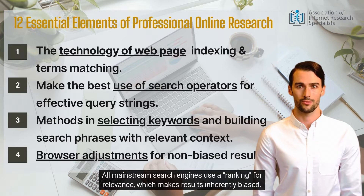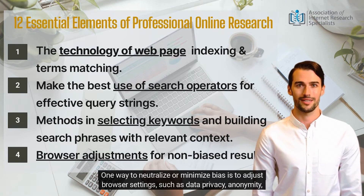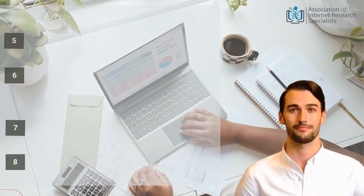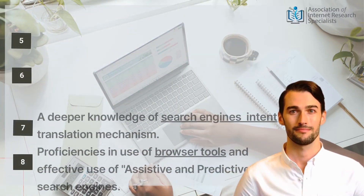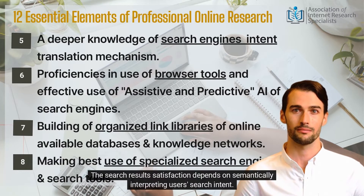Element four: all mainstream search engines use a ranking for relevance, which makes results inherently biased. One way to neutralize or minimize bias is to adjust browser settings such as data privacy, anonymity, location, and language preferences.